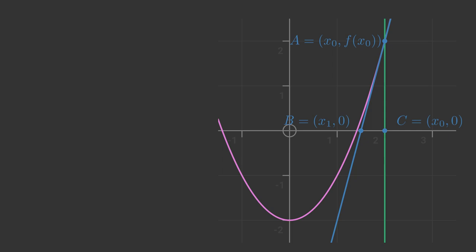Our approach will be to calculate the slope of the line AB to find x1. The slope of the line is the length CA divided by the length CB. Now the y value of A is f(x0), and the y value of C is 0. Since the line is vertical, the length CA is simply f(x0). Also the x value of C is x0, and the x value of B is x1. Since this line is horizontal, the length CB is x0 minus x1.